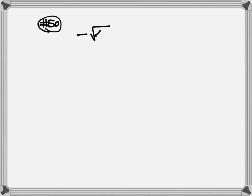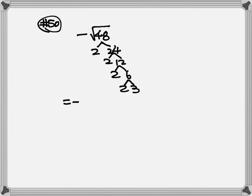Now number 50: we have negative square root of 48. The negative sign is outside, so we keep it. Breaking down 48: 2×24, 2×12, 2×6, 2×3. For the square root, we look for pairs: one pair of 2 goes out, another pair of 2 goes out, and 3 stays inside. Multiplying the numbers outside together with the negative gives us -4√3.